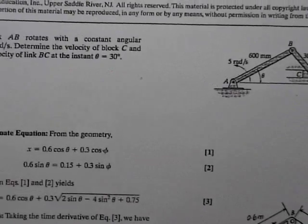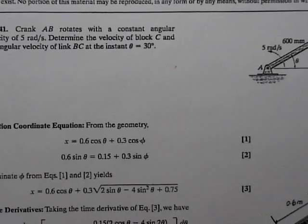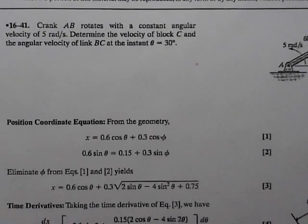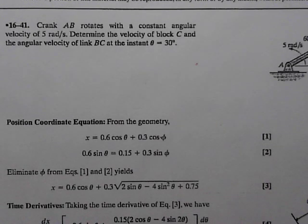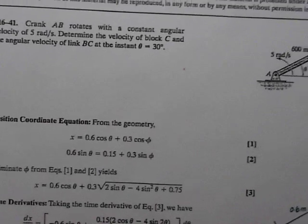Looking at the problem statement, crank AB rotates at a constant angular velocity of 5 radians per second. We need to determine the velocity of block C and the angular velocity of that link at the point where theta equals 30 degrees.